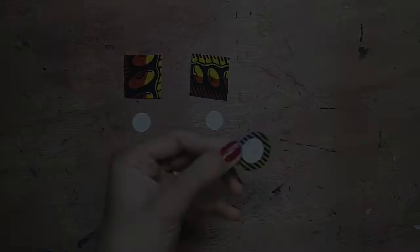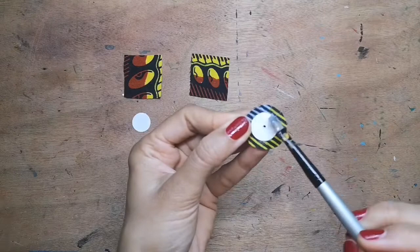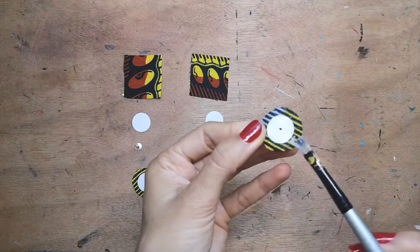The next step is to take more Mod Podge and plaster a bit of it on the paper disc and a bit on the fabric that's surrounding it.